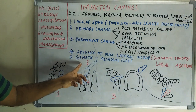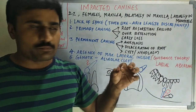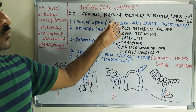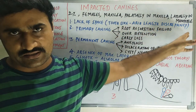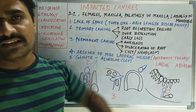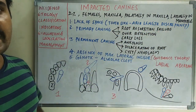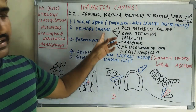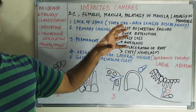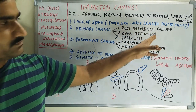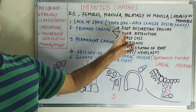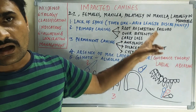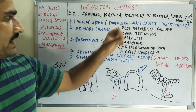Coming to the etiology, there are 5 points. The first and most important is lack of space in the arch — that is, tooth size-arch length discrepancy. When there is no space, the tooth will obviously get impacted. The second is problems related to the primary canine: failure of root resorption, over-retention, or early loss of the primary canine — all these lead to impacted canines.